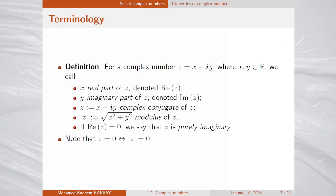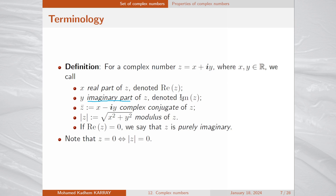Let's define some useful terms for complex numbers. Given z equals x plus iy, we call x the real part of z, denoted Re(z). We call y the imaginary part of z, denoted Im(z). Observe that it is just y — not iy — that is called the imaginary part. Please keep this notation in mind.